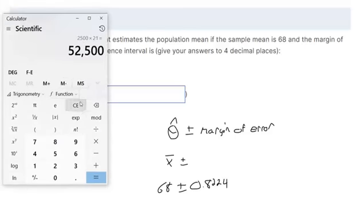So that plus or minus symbol means you do it once with subtraction, so 68 minus 0.8224. That's what we call our lower bound.